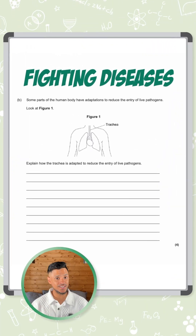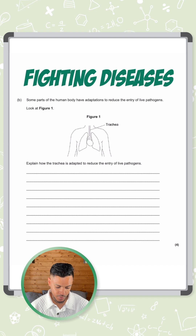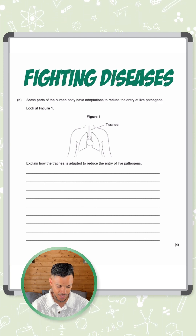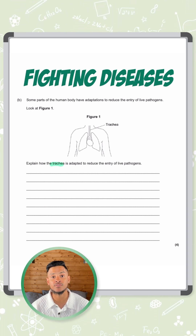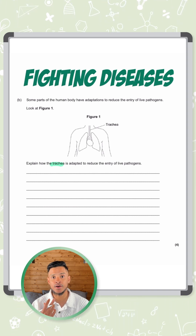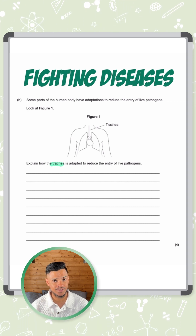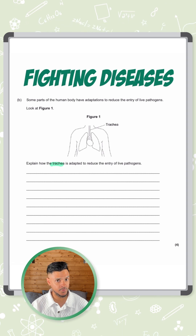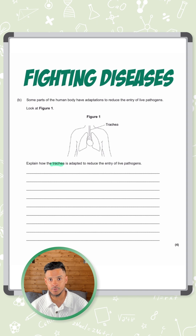This four-mark question is not as difficult as it seems. It says some parts of the human body have adaptations to reduce the entry of live pathogens, and asks how the trachea is adapted to reduce the entry of live pathogens. The trachea is a tube that connects the mouth to the lungs — it's where any air you breathe in goes through before it enters the lungs, so it's a route for potential pathogens to enter the body.